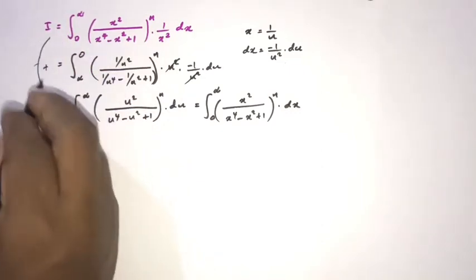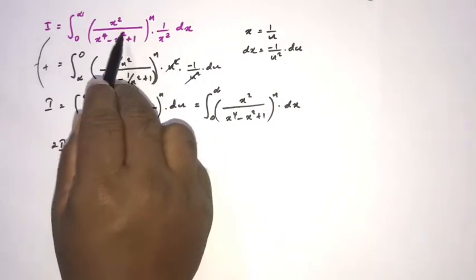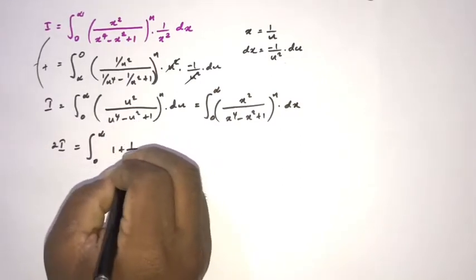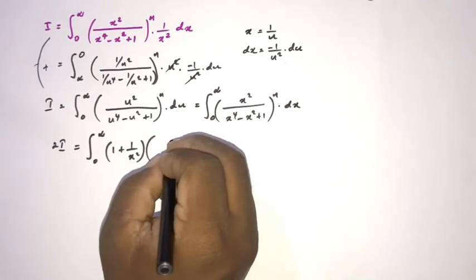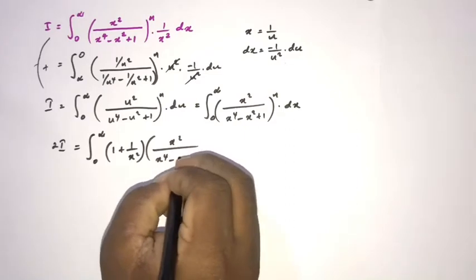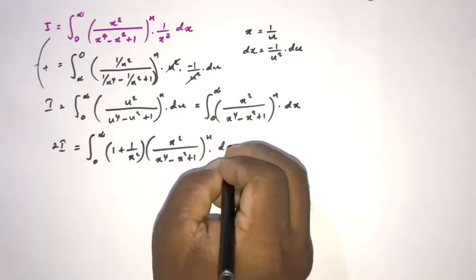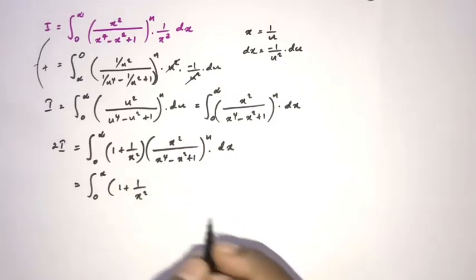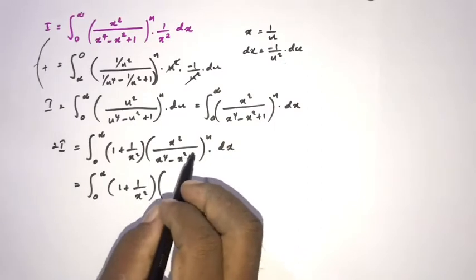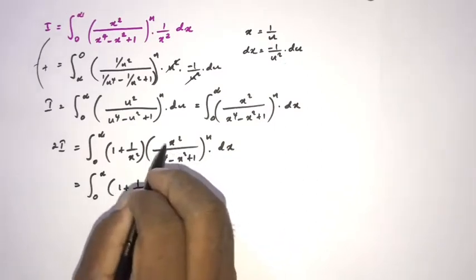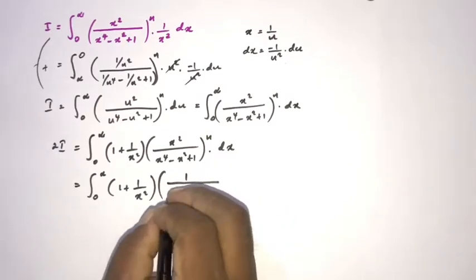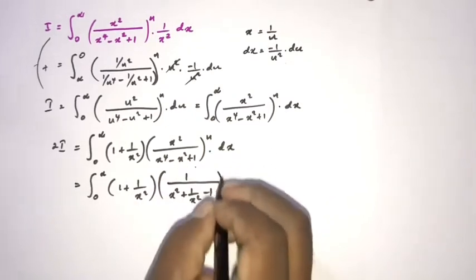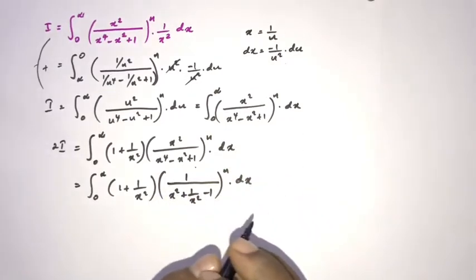Taking their sum: 2 times I equals the integral from 0 to infinity of 1 plus 1 over x squared, times x squared over x to the fourth power minus x squared plus 1, raised to the n-th power, dx. As the next step, we divide both numerator and denominator by x squared, giving 1 over x squared minus 1 plus 1 over x squared in the denominator.